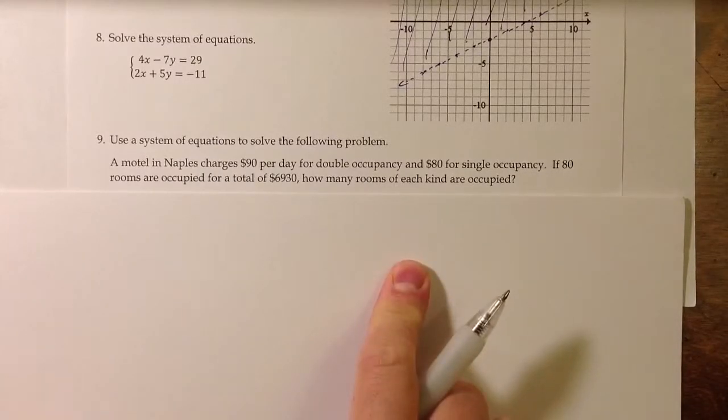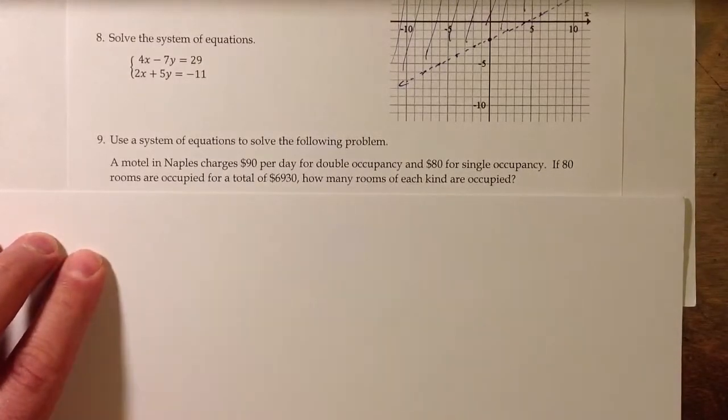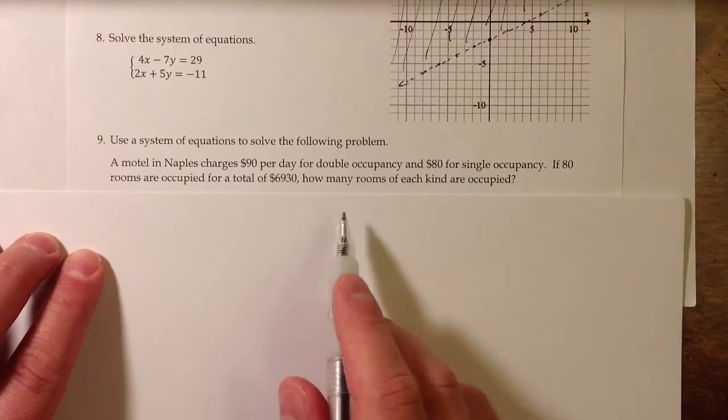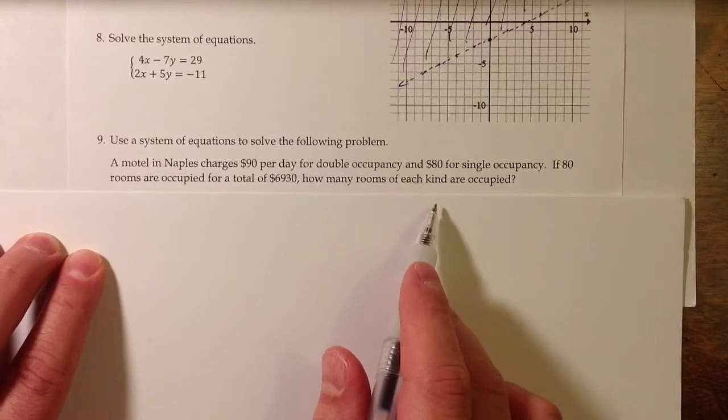Problem 9 is a word problem that requires us to set up a system of equations that we can then solve to answer the question, to solve the problem.